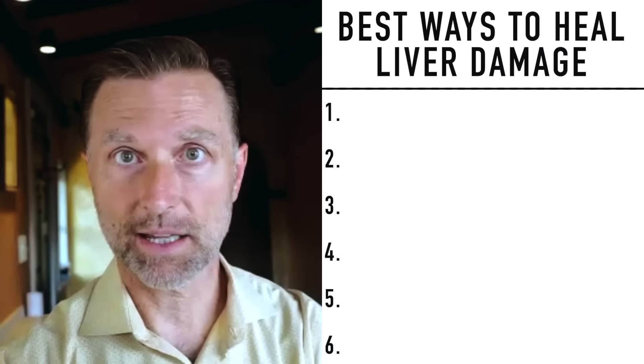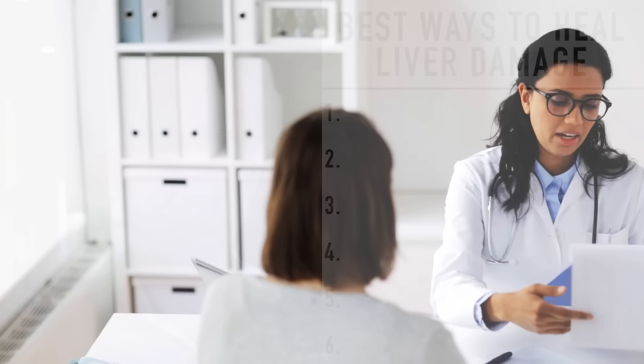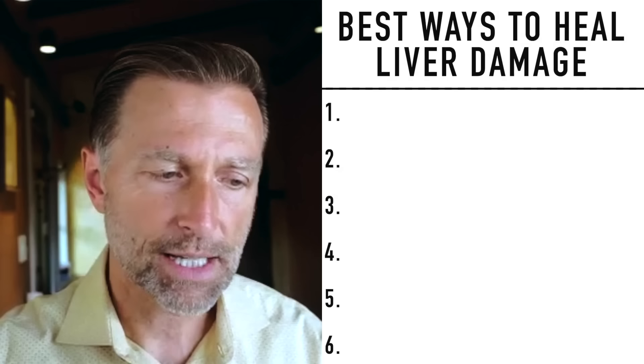I want to talk about what I would do if I had advanced cirrhosis of the liver and I was on the transplant list. What would I do? That's what I'm going to talk about because that's like the worst case scenario. The doctor says it's permanent, there's no chance of reversing this. Well, let's talk about it because there's actually six things that I want to discuss.